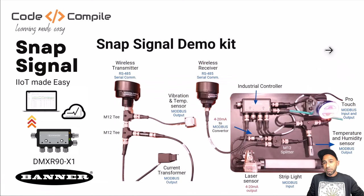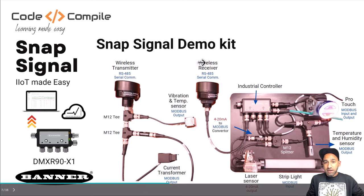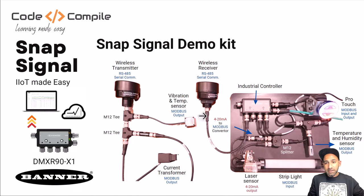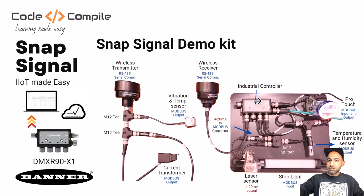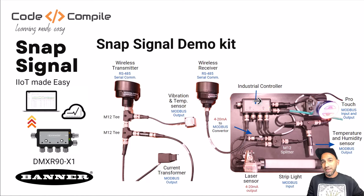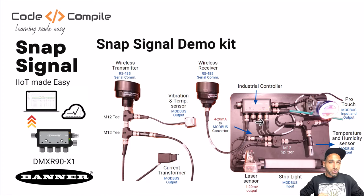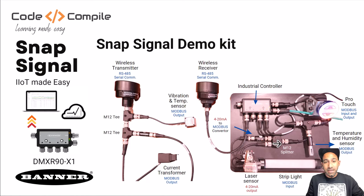In this video, first I'm going to introduce my kit. I have a wireless transmitter and receiver — the wireless transmitter is transmitting data from my vibration sensor and current transformer, and the wireless receiver is receiving this data and sending it to one port of my industrial controller. Both devices are actually the same, but by changing the dip switches you can change their functions. The next two ports are connected to a laser sensor, strip light, and the other to a pro touch and temperature humidity sensor. Using M12 splitter and M12T connectors, you can split your signals and have multiple devices connected to the same port.